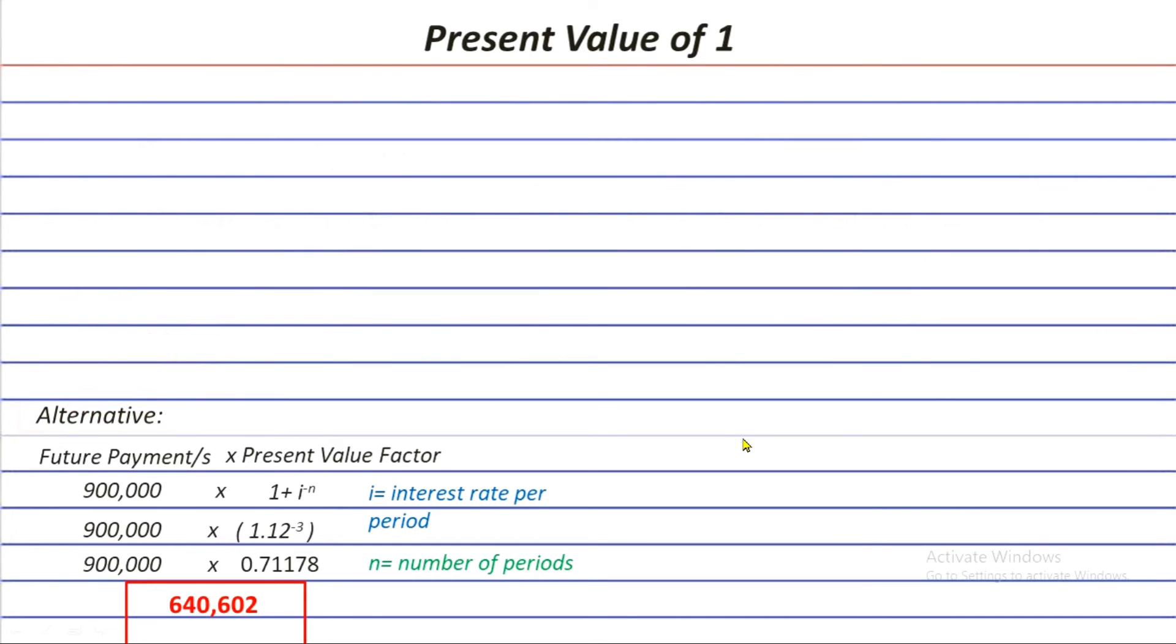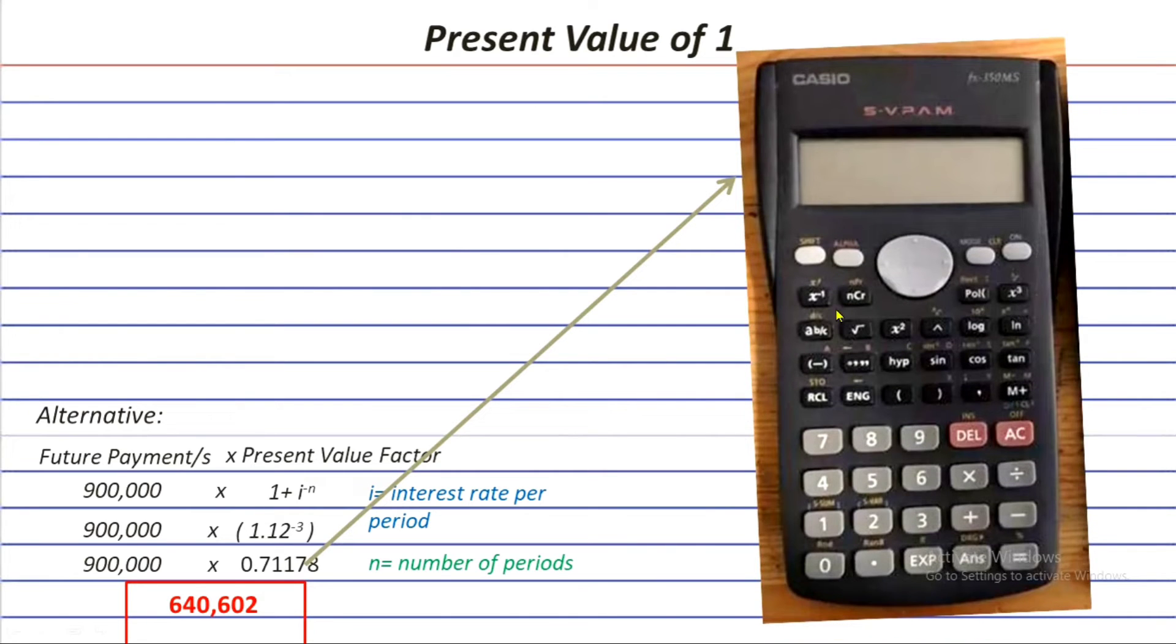Now let's answer the final question, which is how to use the calculators to get the present value of 1 factor. Let's start with this scientific calculator.